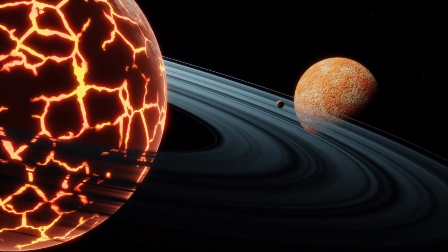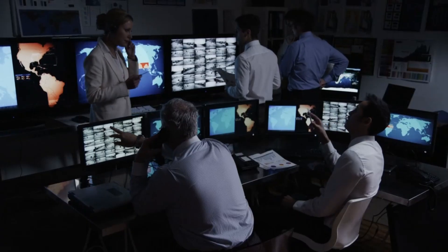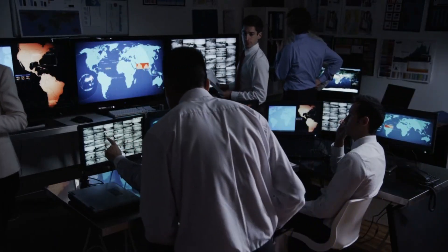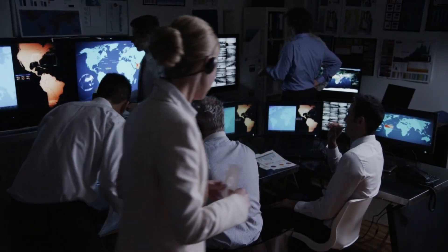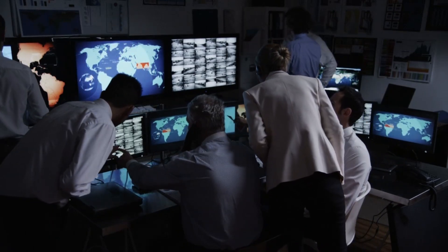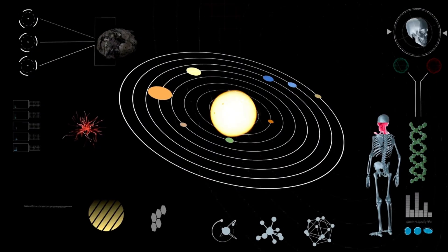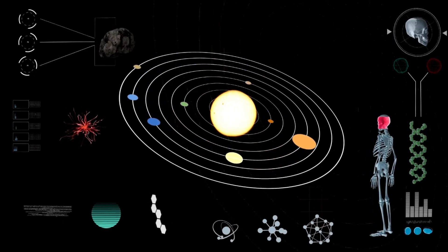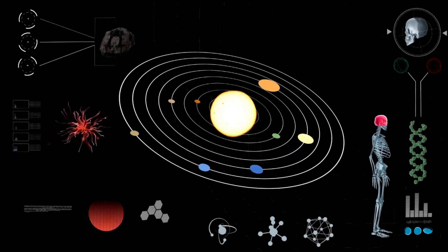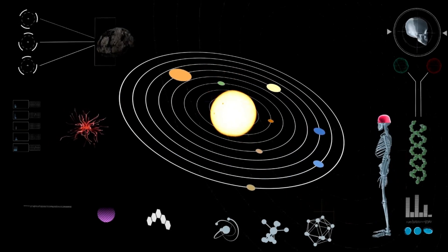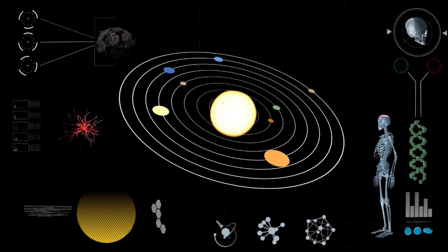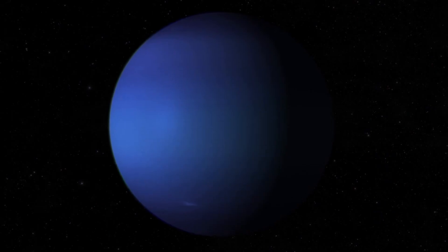For planetary scientists, the impact was a rare, perhaps once-in-a-lifetime chance to observe the complex chain reaction triggered by a cosmic collision in a real-world environment. The lessons learned will ripple outward into many fields, from understanding planetary system formation to refining models of atmospheric chemistry to preparing for the remote possibility of defending Earth from future impacts. The collision on Neptune becomes a microcosm for understanding how chaos, destruction, and creation are intricately intertwined in the universe's grand design.